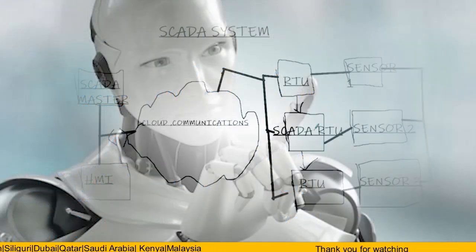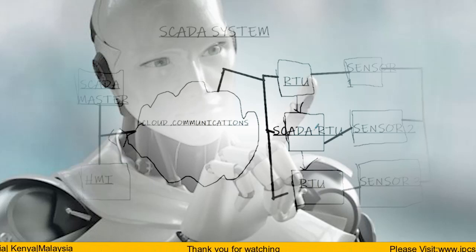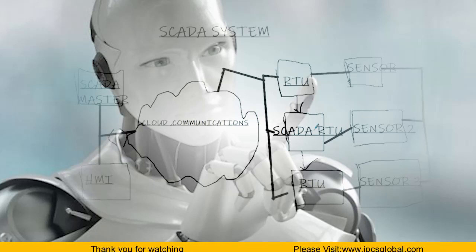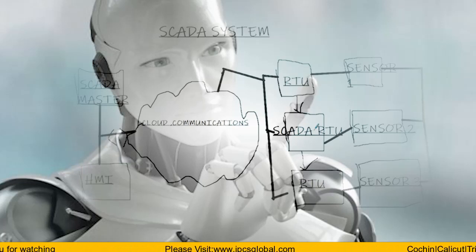Now let's see how a SCADA system works. The SCADA system involves Sensors, RTUs, Cloud Communications, HMI, and a SCADA Master.